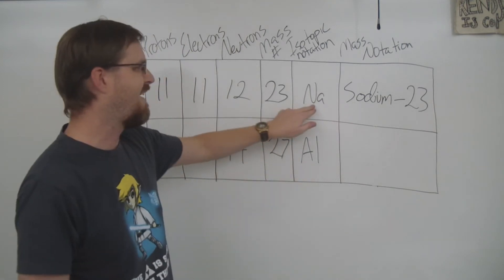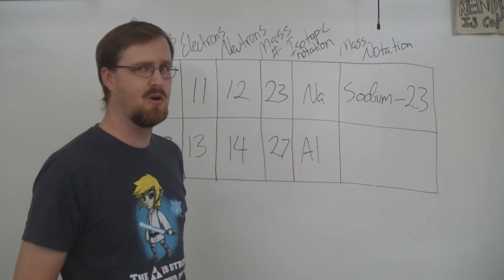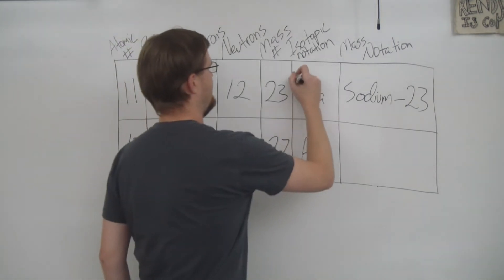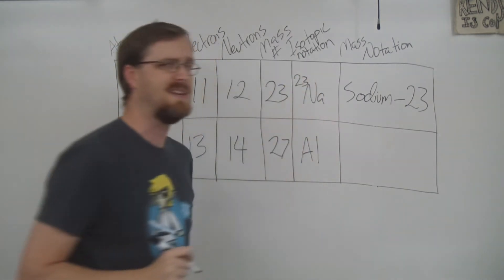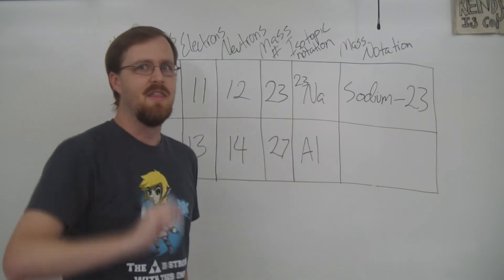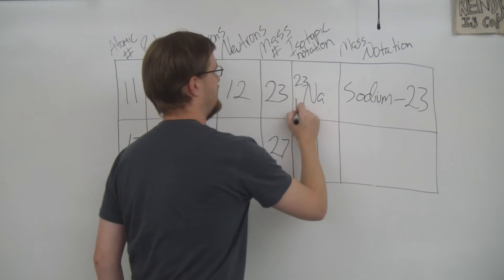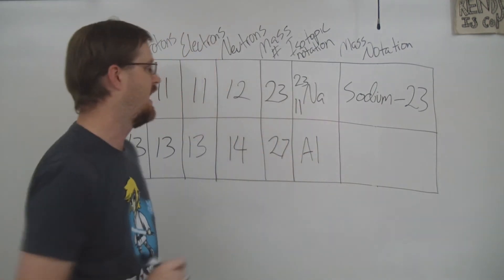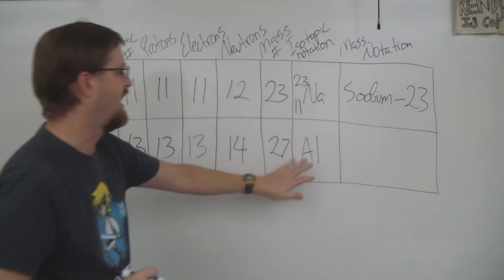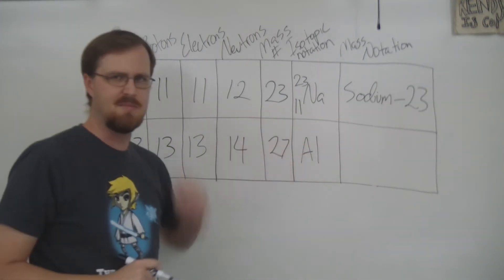Now for the isotopic notation, it is composed of three components: we have the symbol, then in the top left corner we have the mass number — 23 — and in the bottom left corner we put the atomic number, which is 11. The first row is now complete.